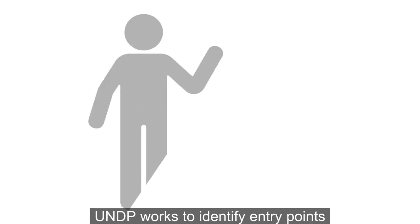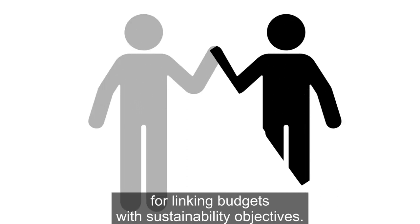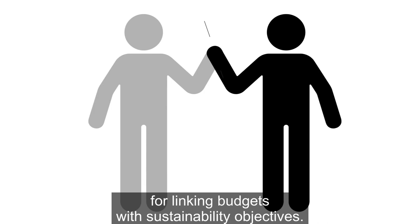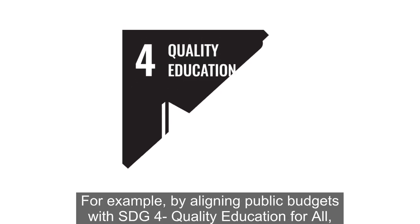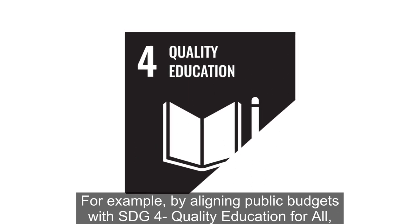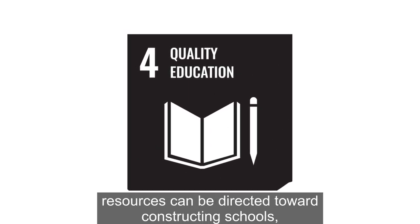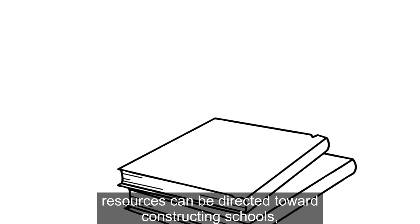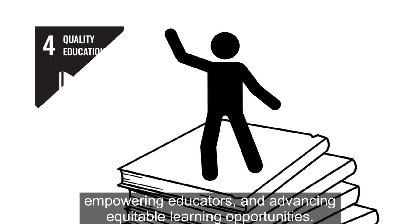UNDP works to identify entry points for linking budgets with sustainability objectives. For example, by aligning public budgets with SDG 4, Quality Education for All, resources can be directed toward constructing schools and empowering educators.